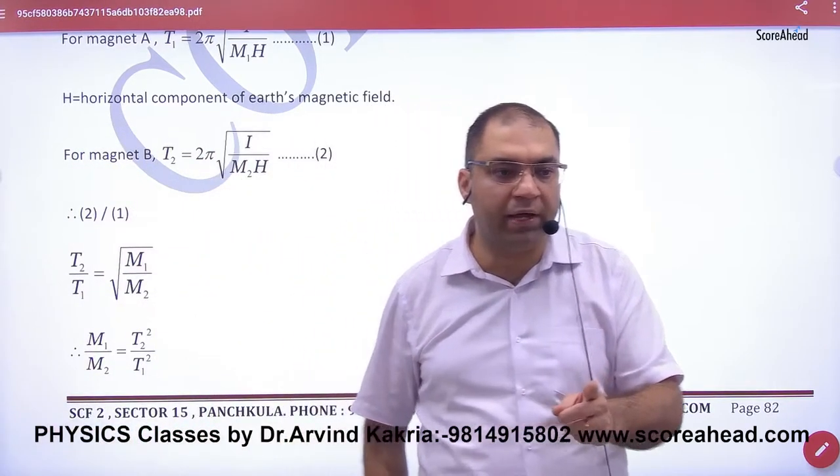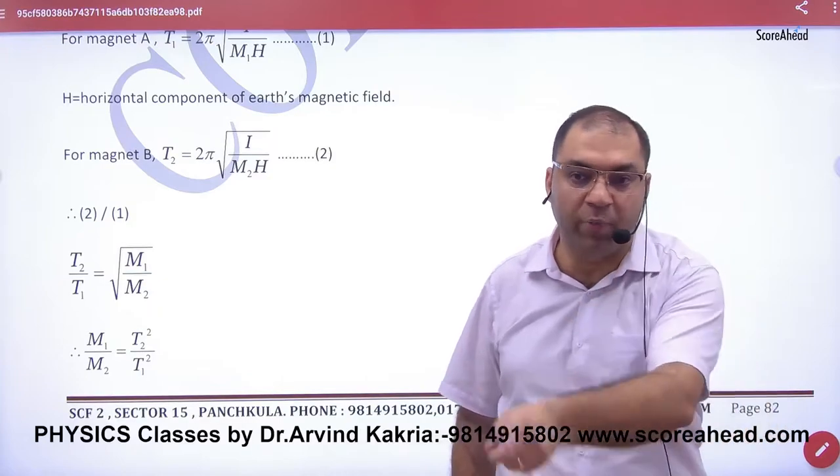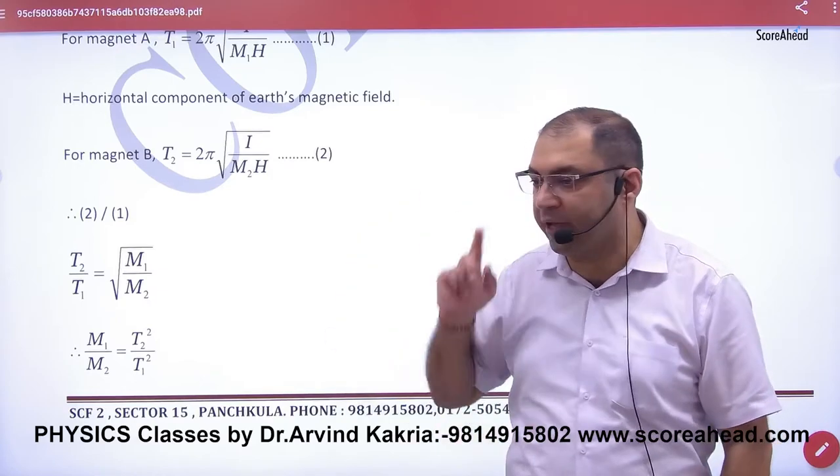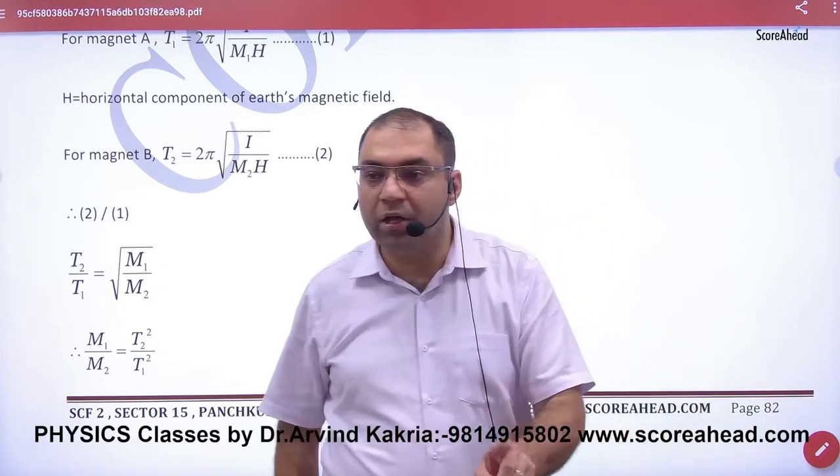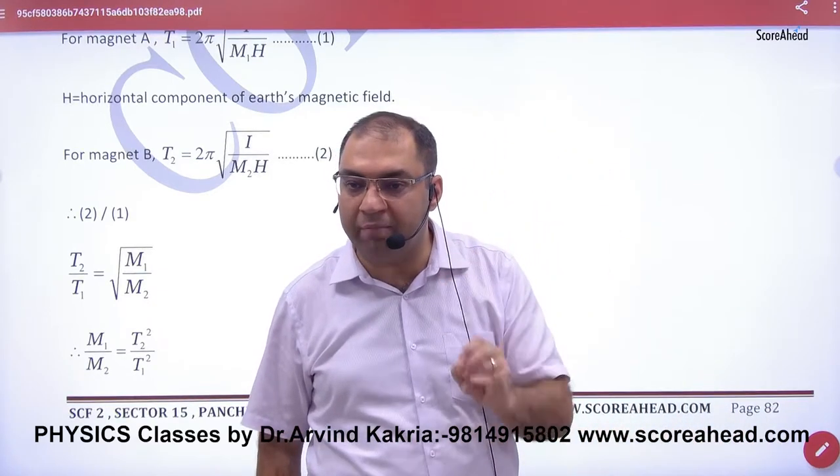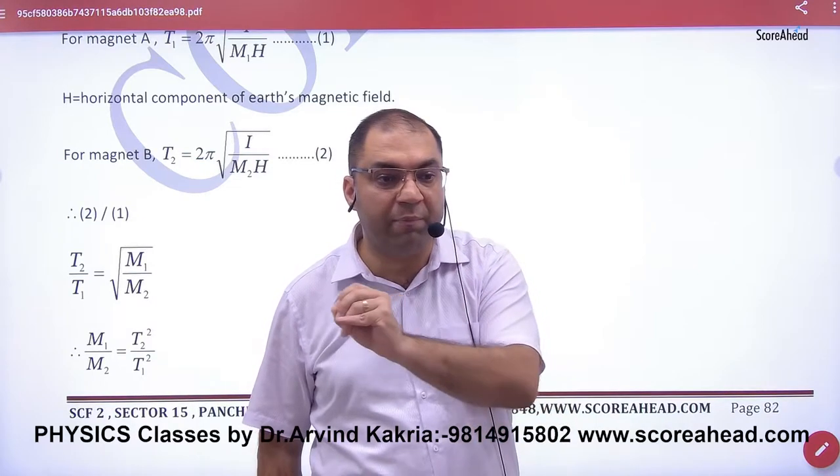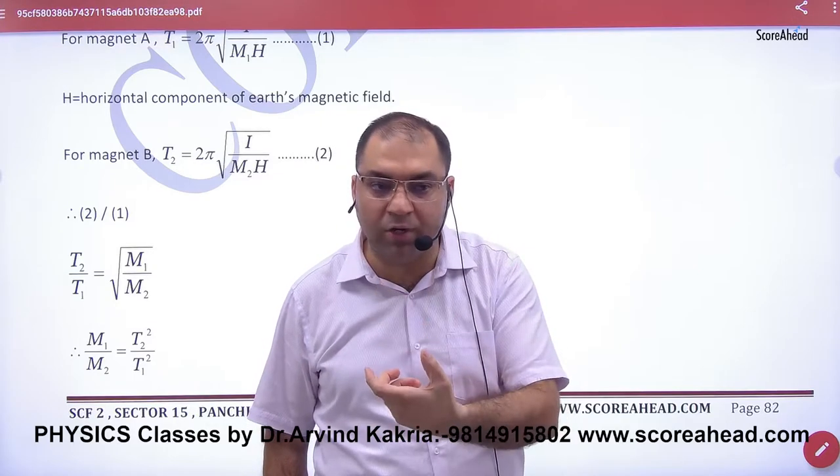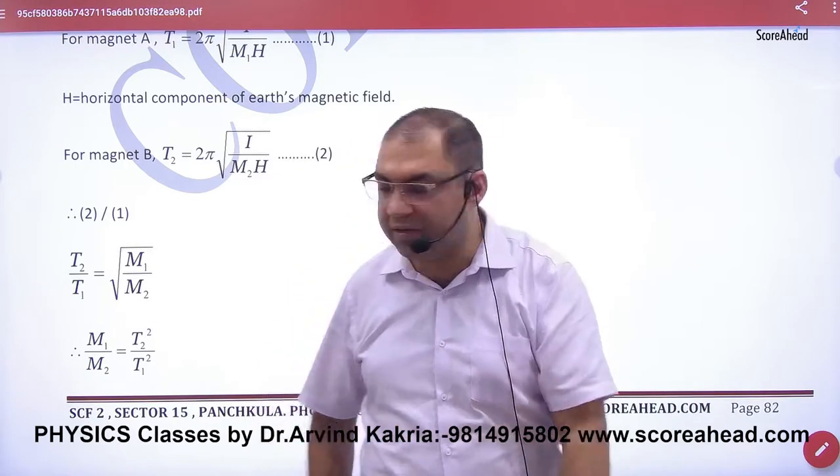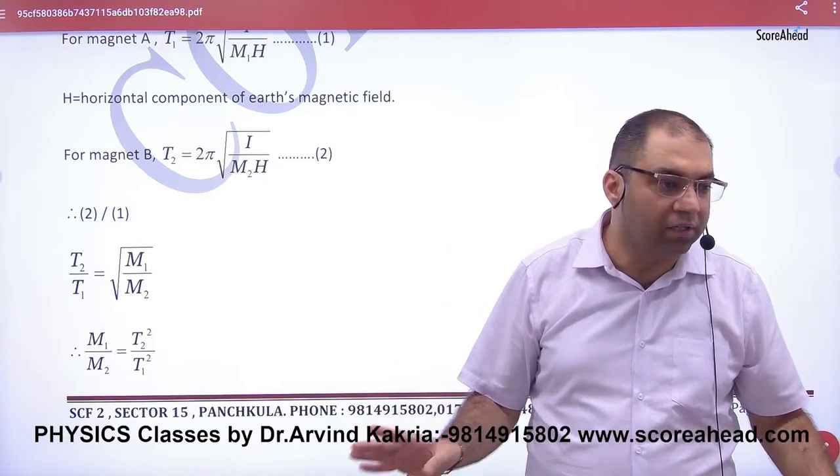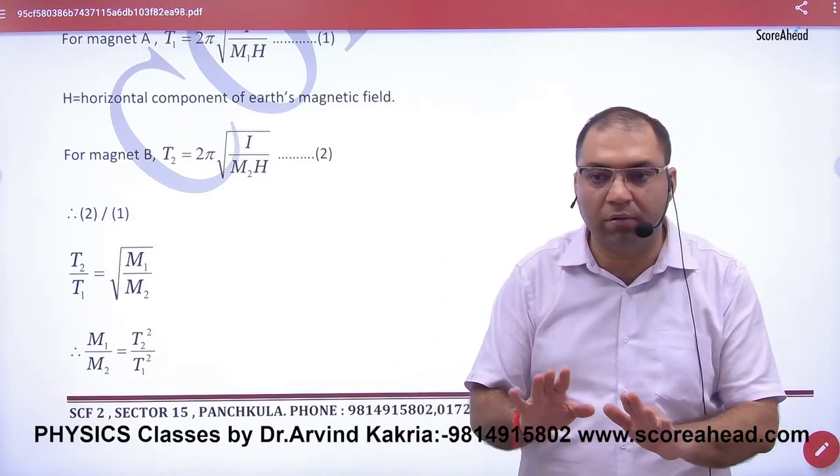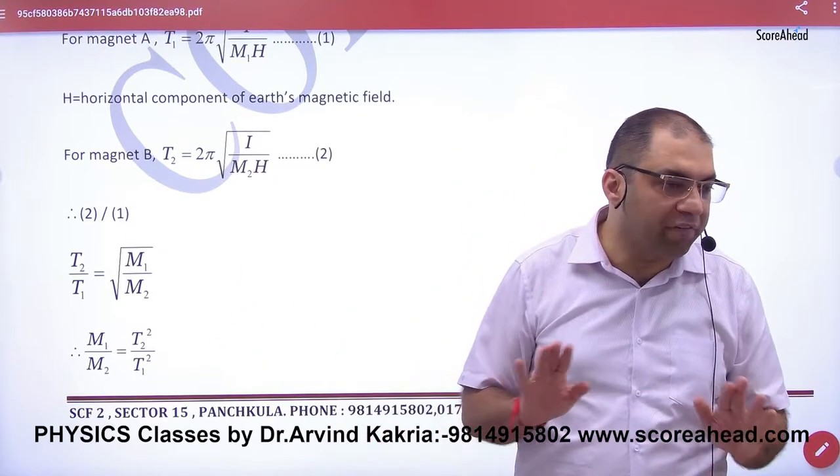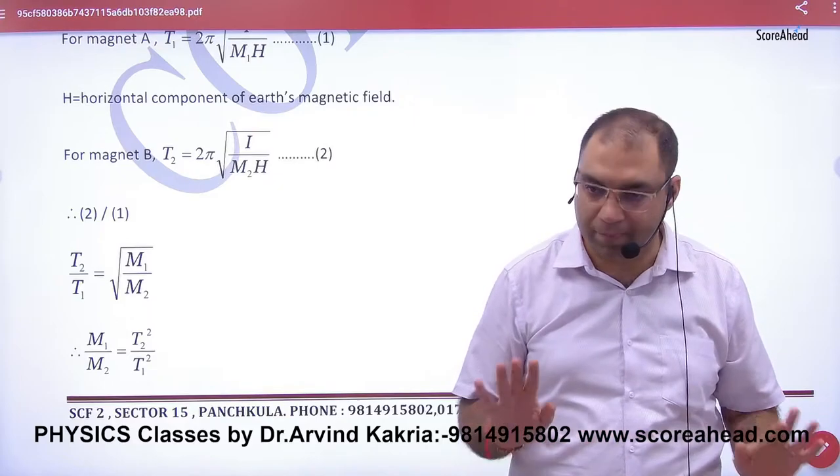You will never see the name 'vibration magnetometer' used. If they ask the question, you will know which topic it is. They will say, let us know that a bar magnet is in the earth's field and the time period is 2 seconds. When the bar magnet and time period relation comes, then use the formula. Time period and the bar magnet - this is the topic.